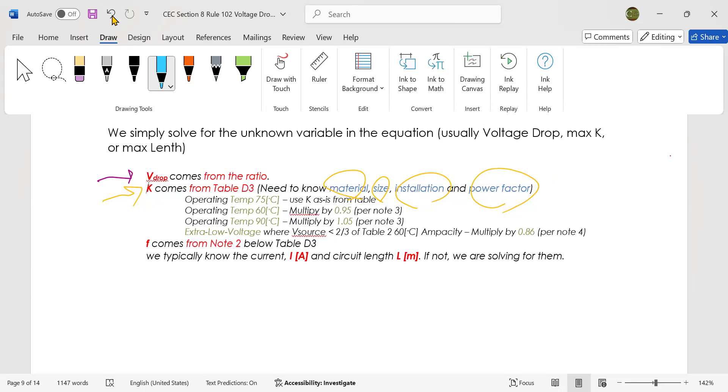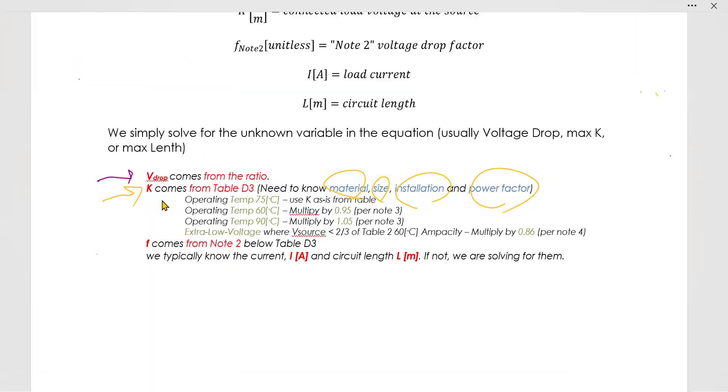We use it just as it is from the table if it is 75 degrees. Take it from the table. But if the operating temperature is lower than that, then we can make the K value a little bit higher. We multiply by 0.95. That's shown in note 3. If the operating temperature is higher than that, you're going to multiply by this - factor 1.05.